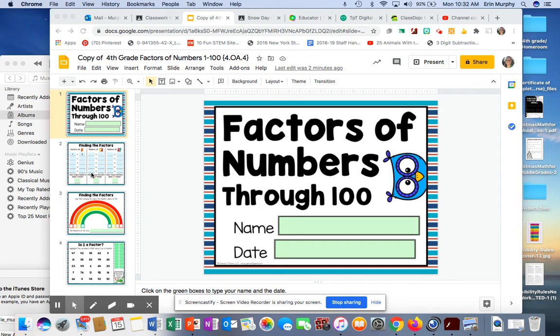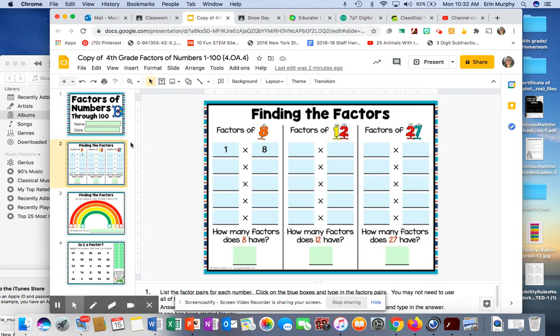All right, so here's how you're doing this assignment. You're going to, on that first slide, find the factors for the number. So you're thinking of all the multiplication facts you can think of to get to 8. So we have 1 times 8 first. I know that 2 times 4 will also equal 8.